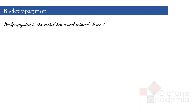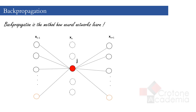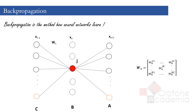To understand how it works, let's take a single node in the nth layer of the neural network and call it J. In a fully connected network, this neuron is connected with all nodes in the immediate input layer, i.e. layer n-1, and the immediate output layer n+1. Let's assume there are C nodes in layer n-1, B nodes in layer n, and A nodes in layer n+1. The nodes in layer n-1 are connected to layer n through the weight matrix Wn, and nodes in layer n are connected to layer n+1 through weight matrix Wn+1.